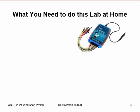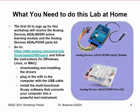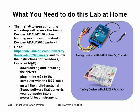What do you need to do in this lab at home? First, you need the Analog Devices M2K module and the Analog Devices ADLP 2000 parts kit, provided to the first 50 individuals to sign up — courtesy of Analog Devices. To set up the module, go to the wiki address shown on screen for instructions on downloading and installing drivers, plugging the M2K into your computer via USB, and installing the multifunctional Scopy software that converts your computer into a powerful test instrument.